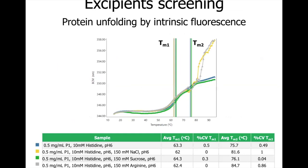Here we have an example of excipient screening where we are looking at the thermal stability of protein P1 in four histidine buffers: without additive, and containing sodium fluoride, sucrose, or arginine. These are protein unfolding curves using intrinsic fluorescence. As you can see, each curve shows two transitions — the first above 60°C and the second after 75°C. There are small differences between the four thermal profiles reflected in the TM values. The sodium chloride-containing buffer shows the lowest TM1 of 62°C and sucrose the highest at 64.3°C.